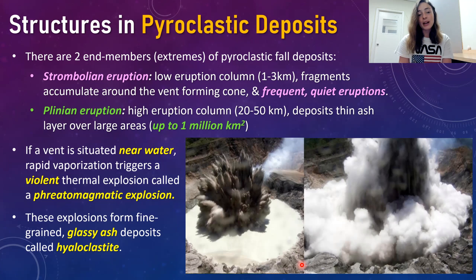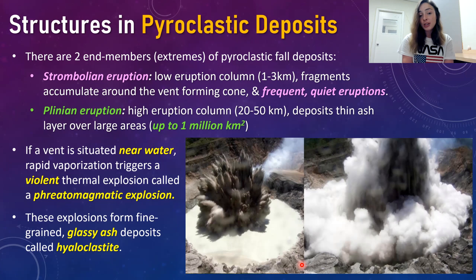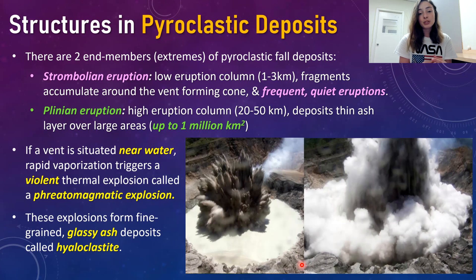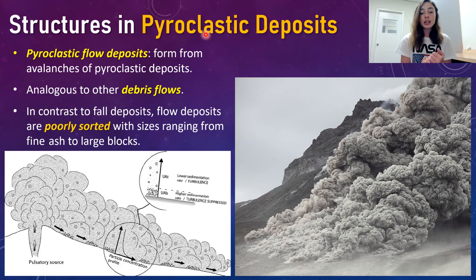Another type of eruption that can cause pyroclastic fall deposits is phreatomagmatic. Phreatomagmatic eruptions happen when a vent is situated near water — rapid vaporization triggers a violent thermal explosion. These explosions form fine-grained glassy ash deposits called hyaloclastite.